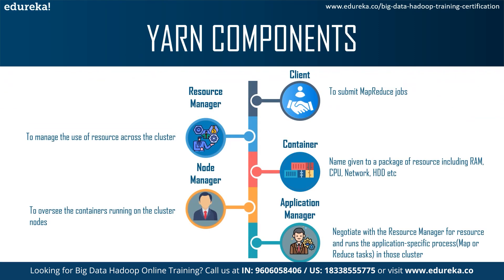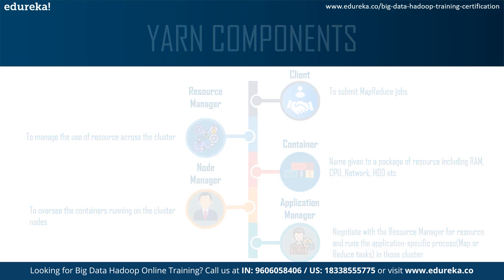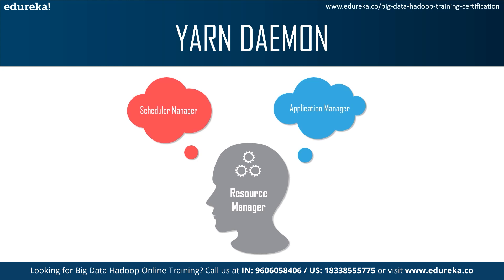Looking at the YARN components in the diagram: Clients submit MapReduce jobs. The ResourceManager manages resource use across the cluster and is the ultimate authority in resource allocation. Containers are packages of resources including RAM, CPU, network, and hard disk, which can run different types of tasks such as map or reduce tasks. The NodeManager oversees containers running on the cluster node. The ApplicationMaster negotiates with the ResourceManager for resources and runs application-specific processes like map or reduce tasks.